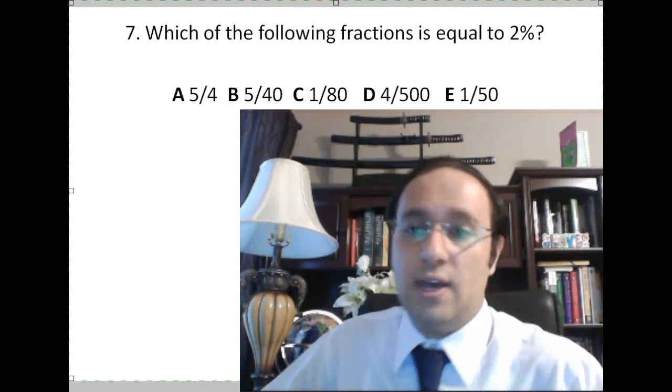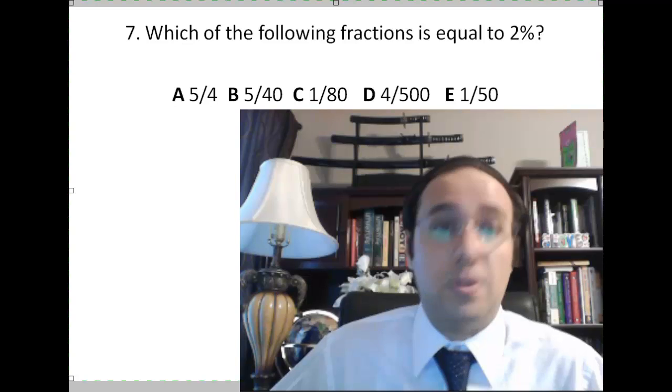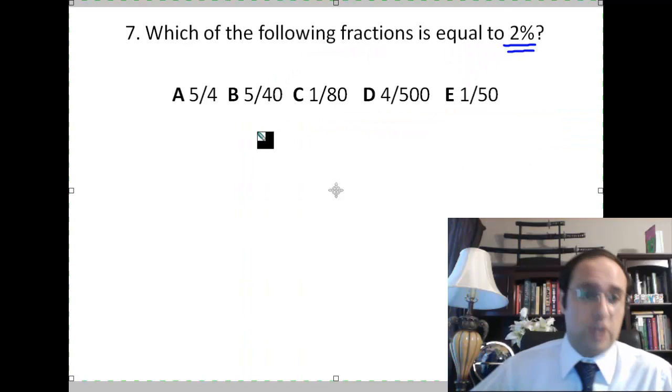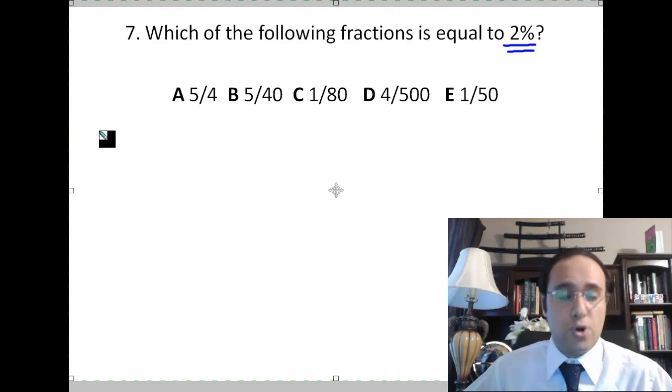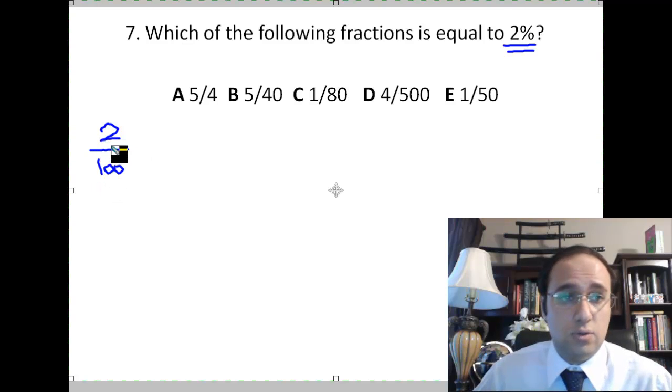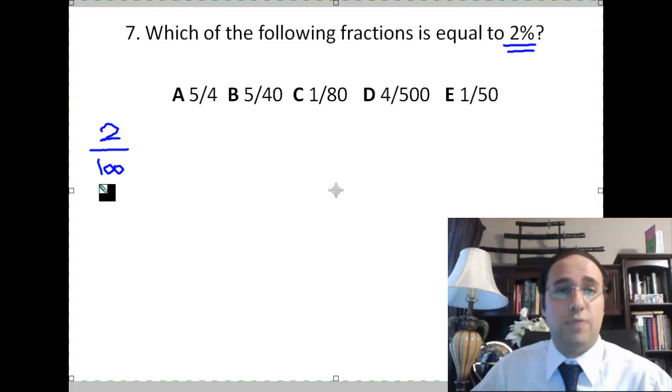Question number 7, Bergen County Academy's Admission Test Practice Sheet. Which of the following fractions is equal to 2 percent? 2 percent means 2 over 100. Per means over, and cent is 100. So 2 percent means 2 over 100.